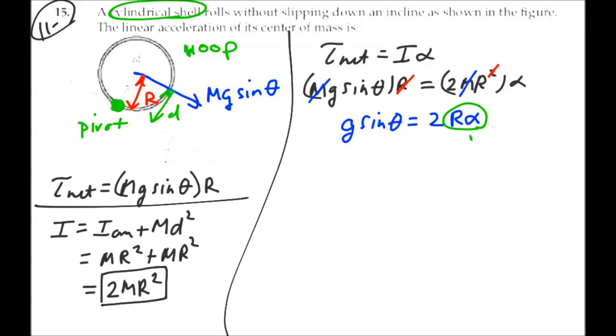Well, r times alpha is the linear acceleration. So this is equal to 2 times the linear acceleration down the incline. Or we can rewrite this as the linear acceleration is equal to g sine theta divided by 2. So for a hoop or a cylindrical shell rolling down the incline, the linear acceleration of the center of mass is g sine theta divided by 2.